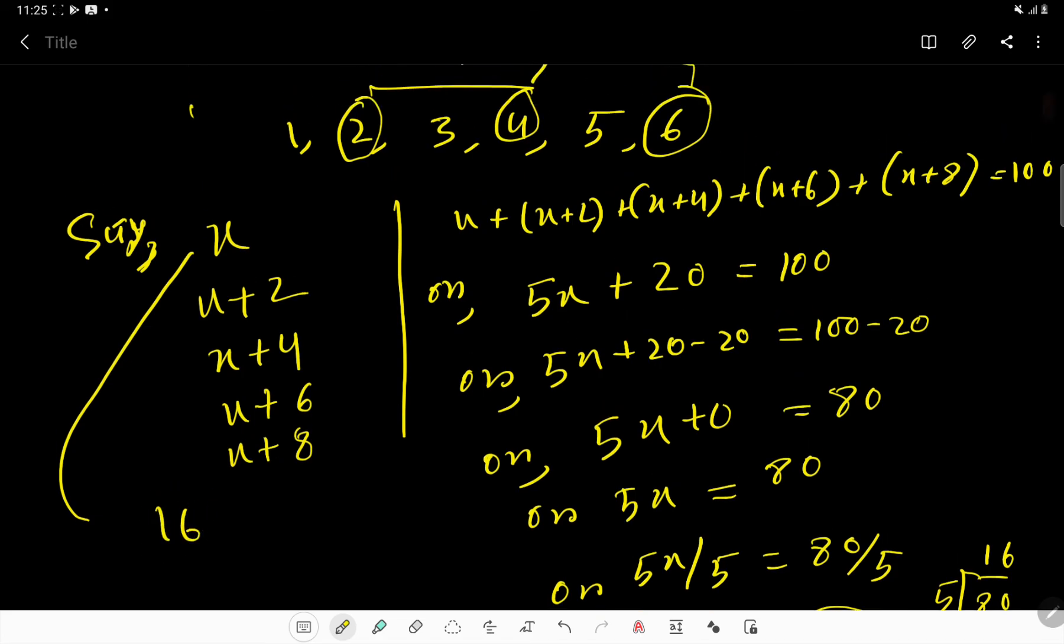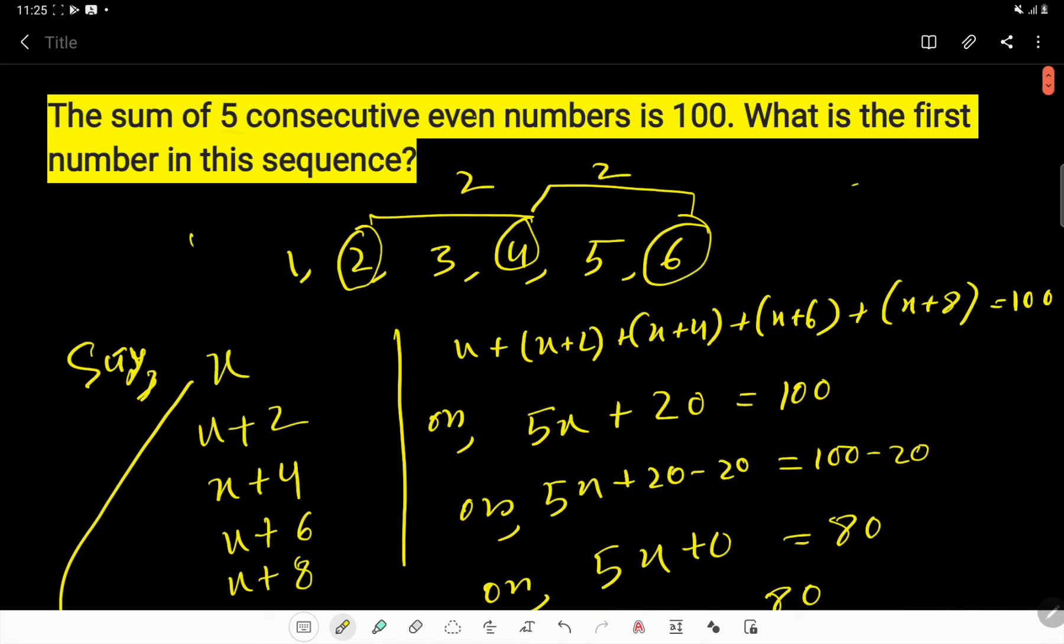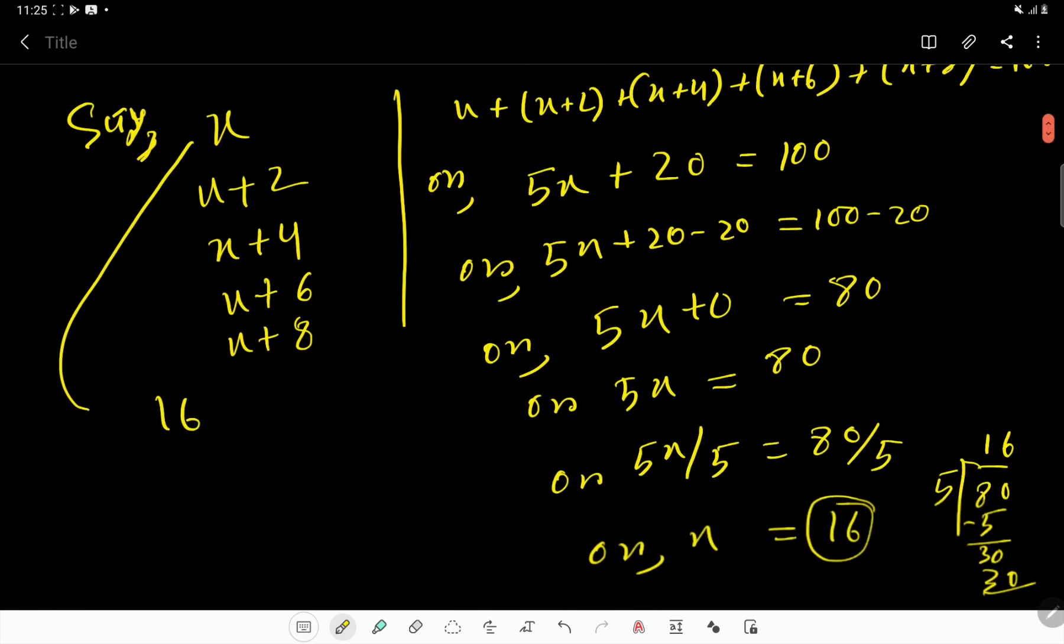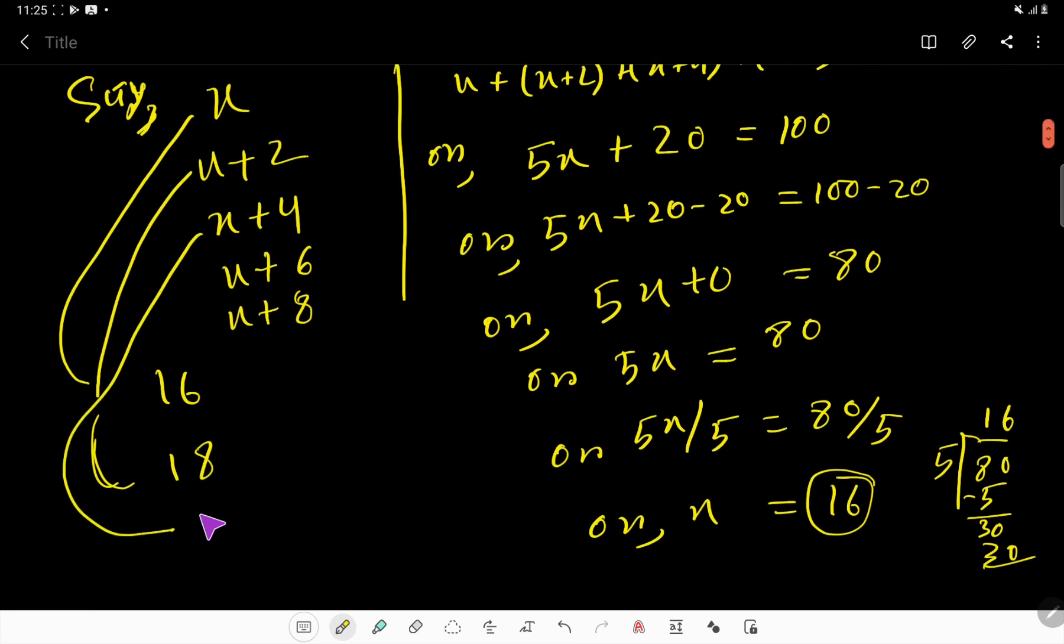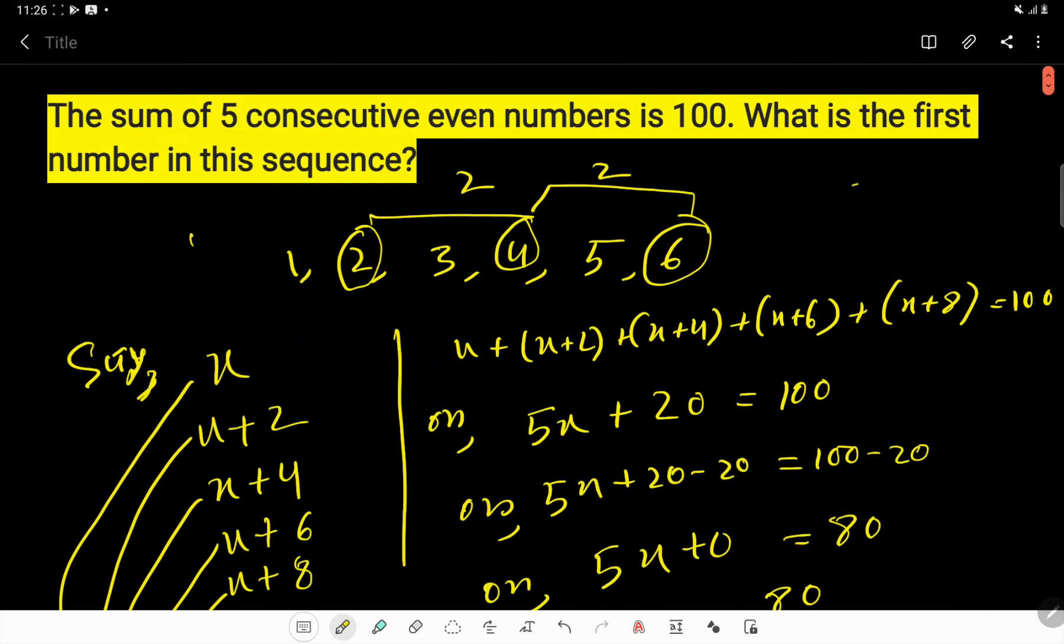So the value of x is 16. So the value of x is 16, that is the first number is 16. So what is the first number in this sequence? Actually 16. So second number will be 18, just you have to increase 2, and third number will be 20, fourth number will be 22, and fifth number will be 24. So in this sequence the first number is 16. I have a blog post about the solution of this math. You can read that blog post from the description box of this video.